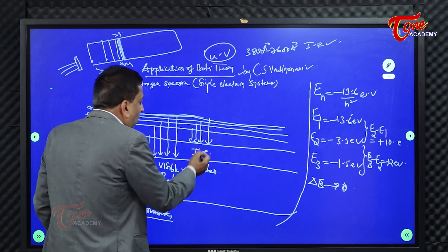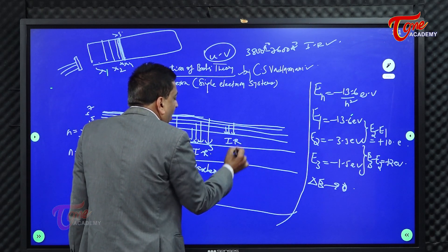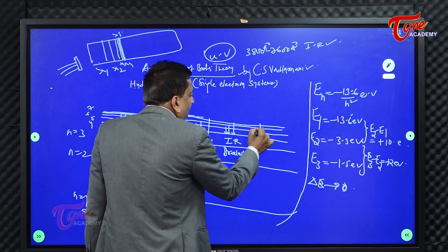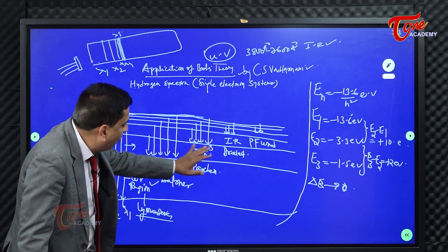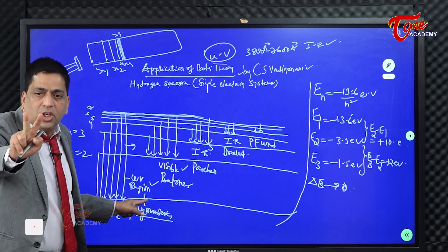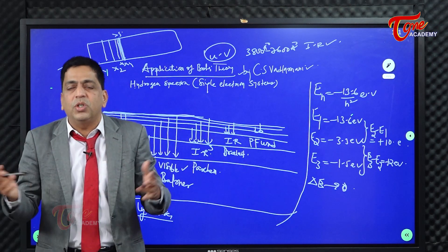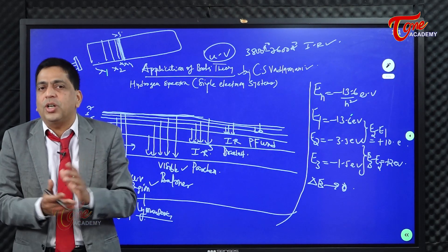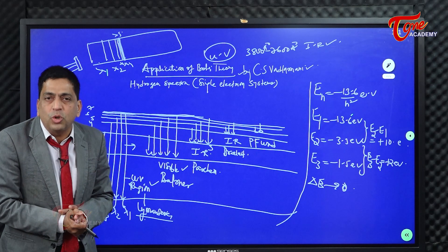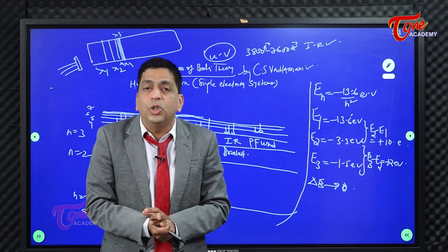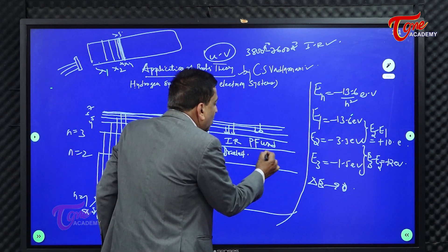So you have basically five series: all jumps to the first (Lyman), all jumps to the second (Balmer), all jumps to the third (Paschen), all jumps to the fourth (Brackett), and all jumps to the fifth (Pfund). In fact there is a sixth series but we don't discuss it at this level. The first series falls in ultraviolet, the second (Balmer) in visible, and the third, fourth, fifth all fall in infrared.